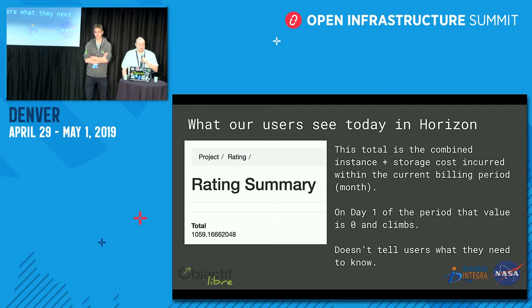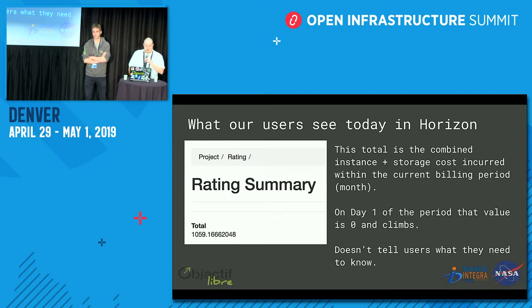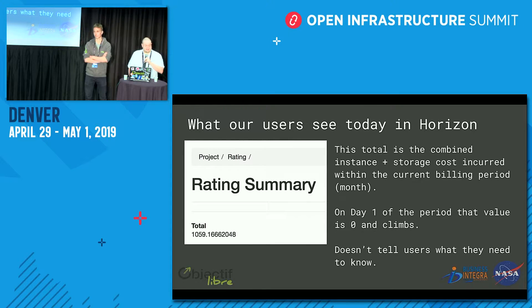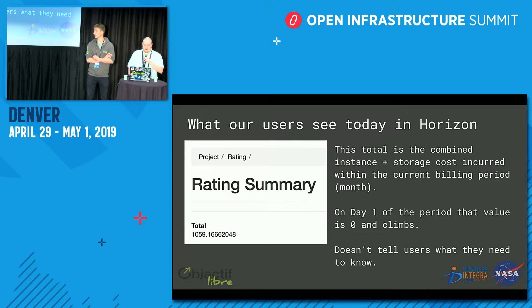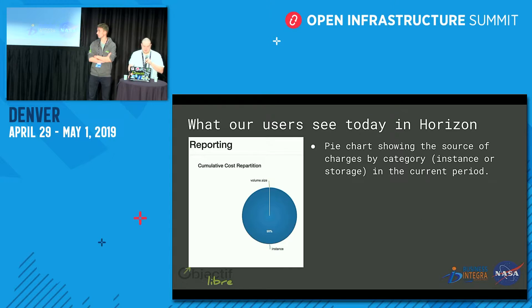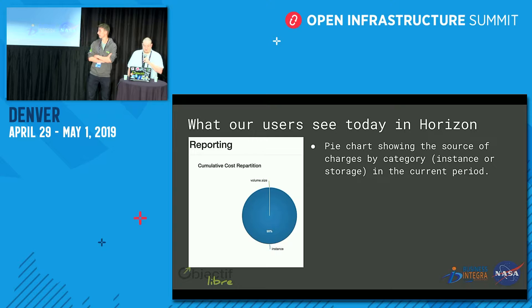What I usually see today in Horizon — if you go into the rating module, you can see the rating summary, which is just a combined instance and storage cost for the current billing period. On day one of the month, that value resets to zero and climbs. Looking at that value, the users can't tell what's going on. On another screen, the reporting tab, you can see a pie chart that shows the source of charges by category — instance or storage — in the current period.